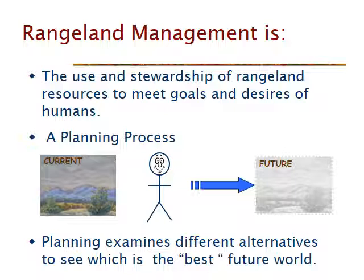In essence, rangeland management is a planning process. The definition I use is: the use and stewardship of rangelands to meet the goals and desires of society. We start with a current set of rangelands, look at what resources we have, dream up possible alternatives, and try to get to those alternatives — they have to be realistic. We need to use the resources available in sustainable ways. It's basically a process of knowing where you are and where you're headed.